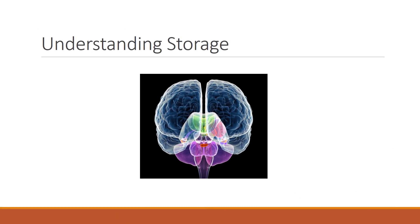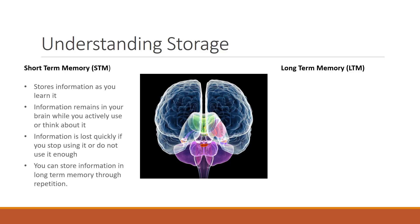To understand how a computer stores data, it is worth first exploring how humans store information. Humans have short-term memory and long-term memory, which we use to store everything we learn. Short-term memory is our immediate memory, and it allows us to store information as you learn it. This information will stay in your brain only while you are actively thinking about it or using it.